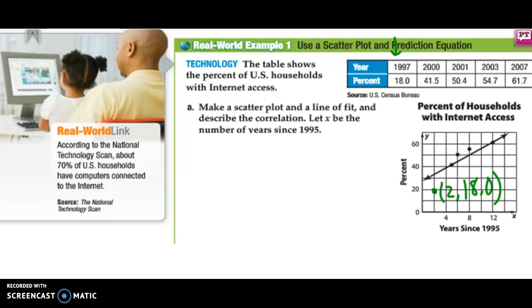So, the next one, 2000, that's 5 years after 95, 41.5. So, we've got 6 years after, then 50.4. 8 years, 54.7. And then 12 years, 61.7. So, we've graphed that. Yours is already graphed in your notes, so you don't have to worry about that.